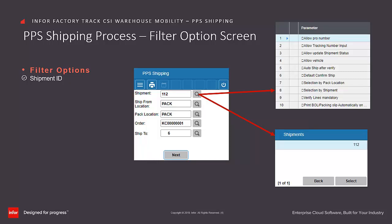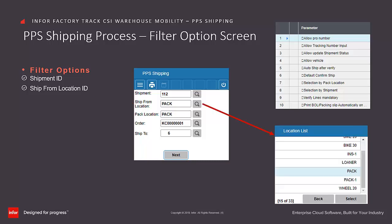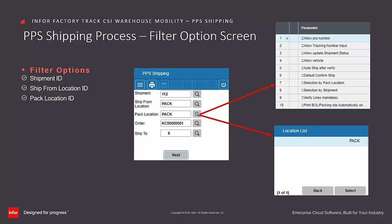You can then enter, scan, or search from a list of shipments available for shipping. If a shipment is selected, FactoryTrack navigates directly to the next processing step. The Ship From Location ID is always available — you can enter, scan, or search and select the location.